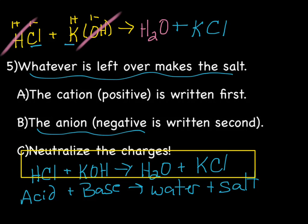The last step is to balance the equation — make sure we have the same number of atoms on both sides. We have two H's on the reactant side and two on the product side. Cl: one on the reactant and one on the product. O's: one on each side. K's: one on each side. So we're done.